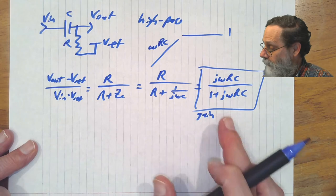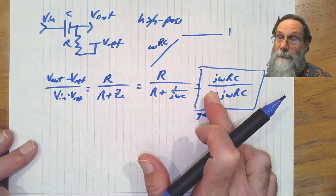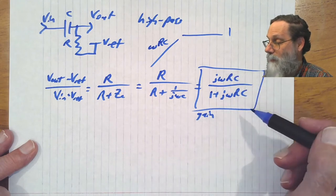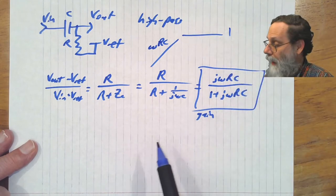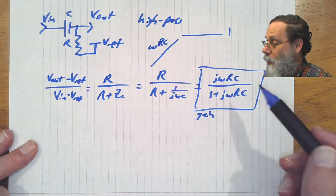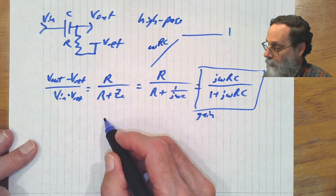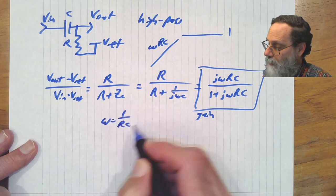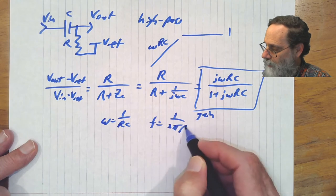All right, and what happens as we go to infinity? Well, as we go to infinity, the 1 disappears again. And we have jωRC over jωRC. So we get gain of 1 at high frequency. And the corner frequency is again when omega equals 1 over RC or frequency equals 1 over 2πRC.